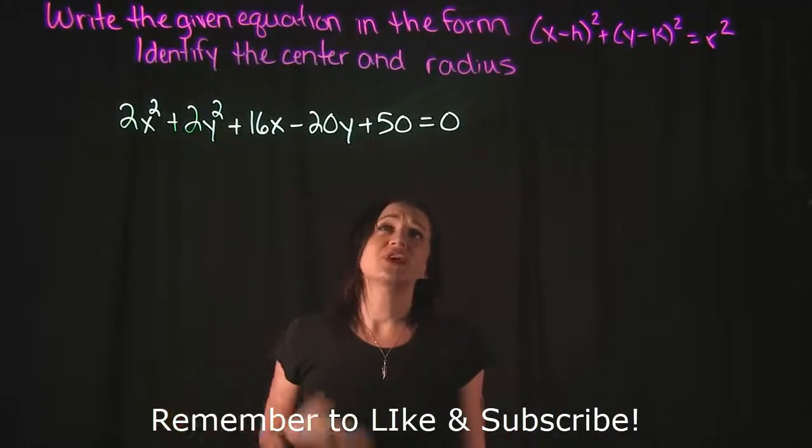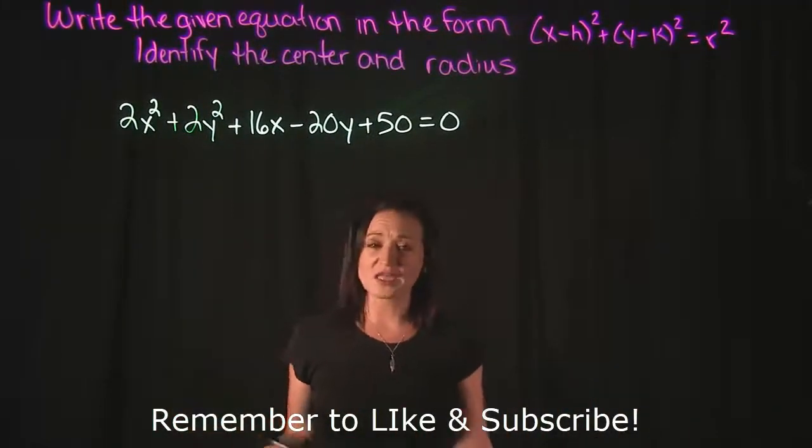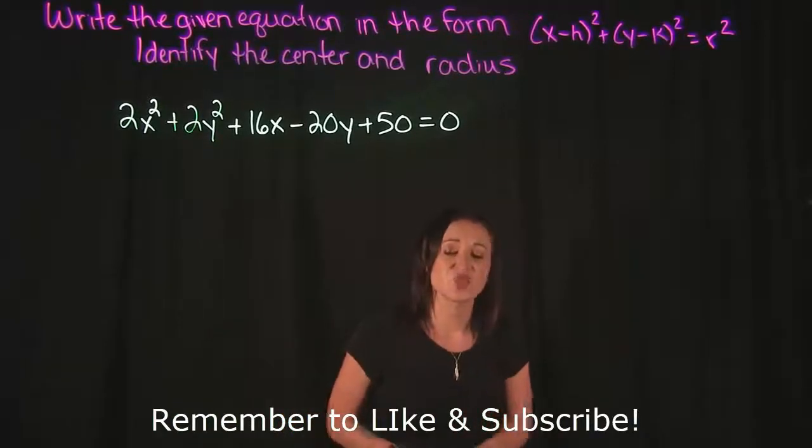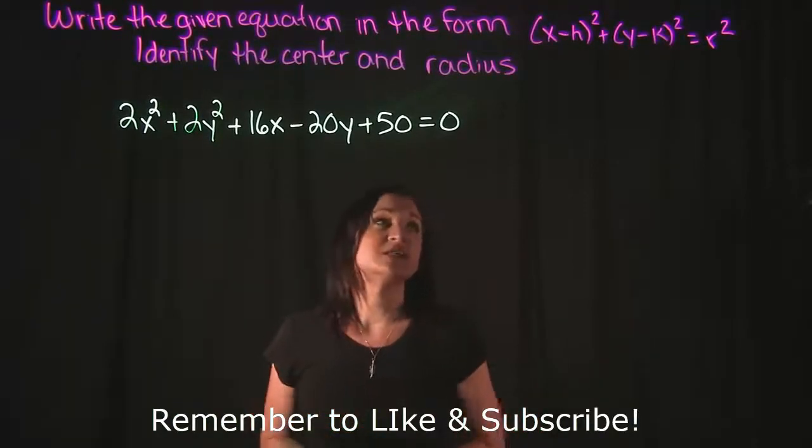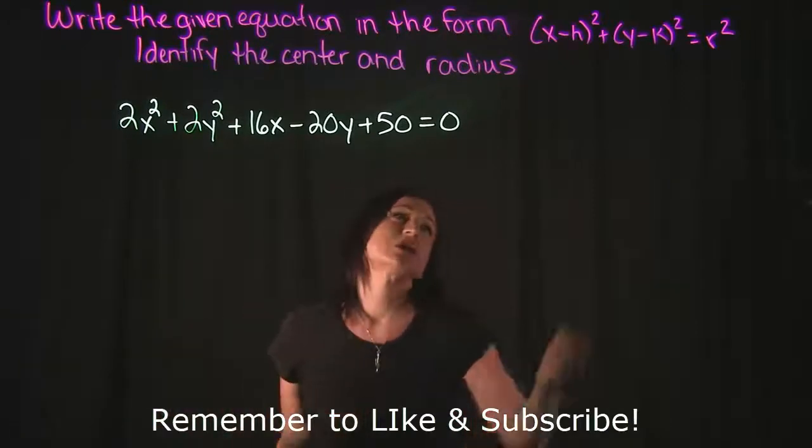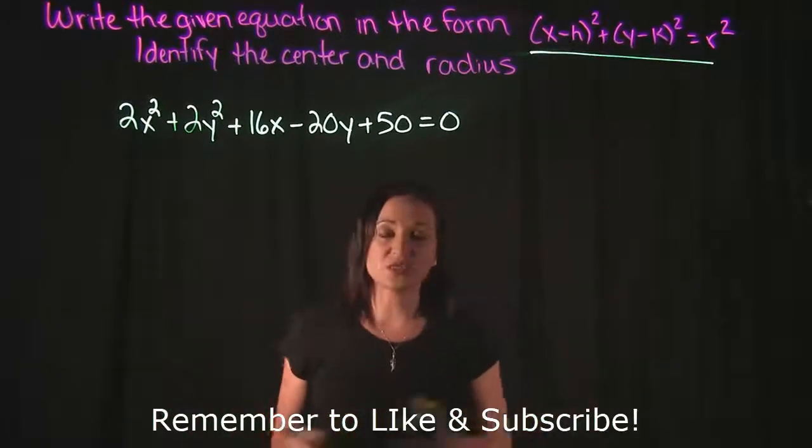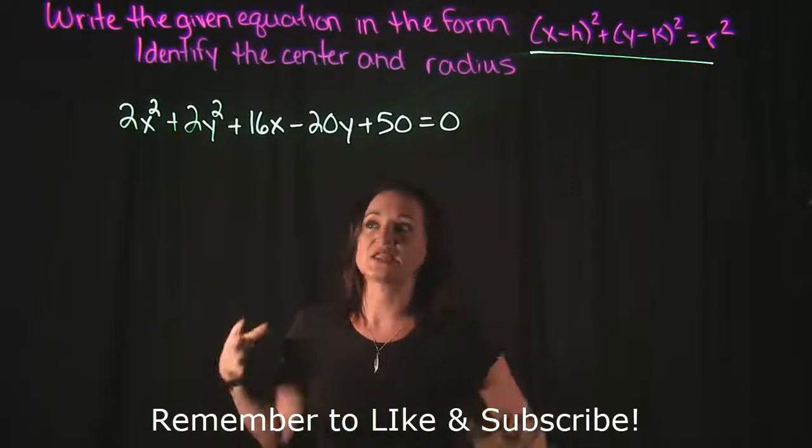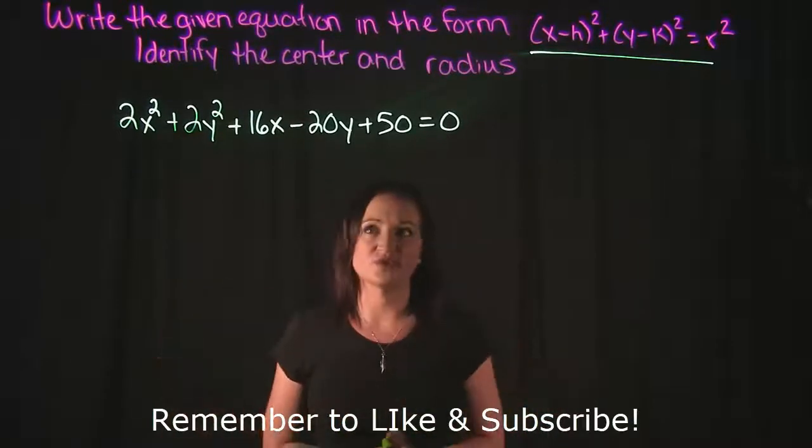So for this video, we're going to write the given equation in the form (x-h)² + (y-k)² = r². And we're going to identify the center and the radius. So this formula right over here is a way to write an equation in standard form of a circle.